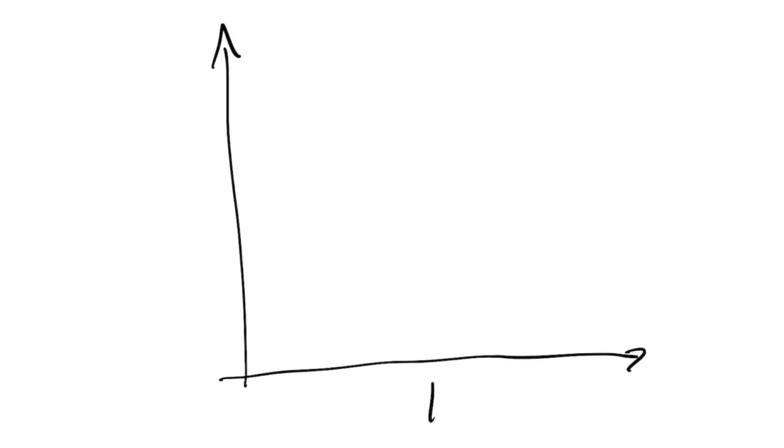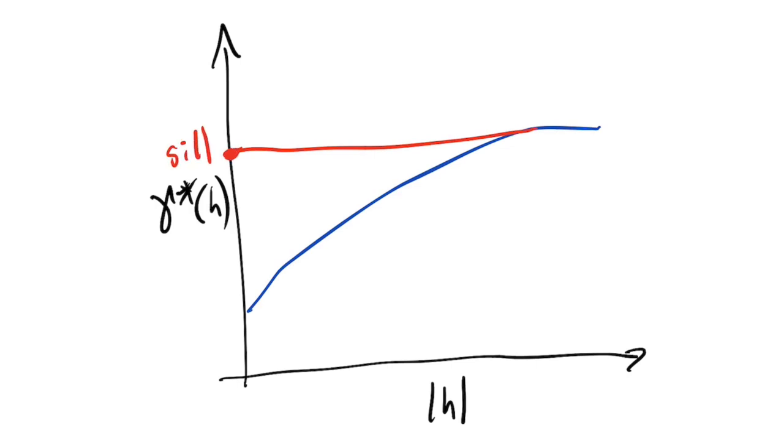The typical parameters are three, and they are called the sill, the nugget, and the range. The sill is the value of the maximum dissimilarity between points. The nugget is the value of the dissimilarity of points at the same location, so when it is not zero, the data is usually noisy or the resolution of the dataset is low.